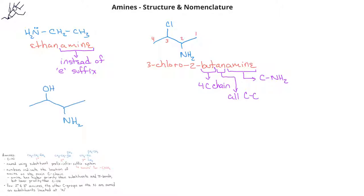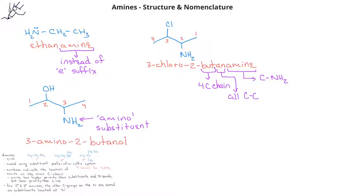In this third example, we have both an alcohol and an amine functional group. As indicated previously, the alcohol gets numbering priority, and so in this case we would number from left to right. The amine group would now be named as a substituent with the name amino. This compound would then be named 3-amino-2-butanol.